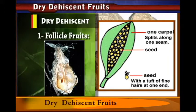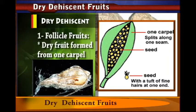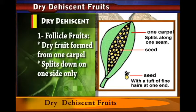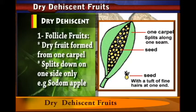The follicle is a dry fruit formed from one carpel, and it splits down one side only. An example of this type of fruit is the sodom apple fruit, which splits open on one side only and releases the seeds. It is formed from one carpel.